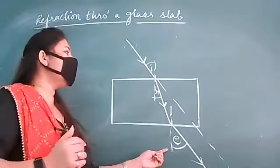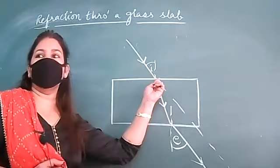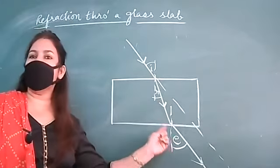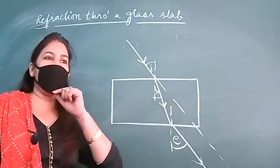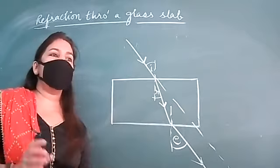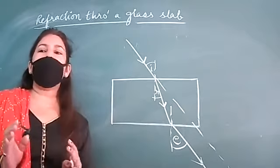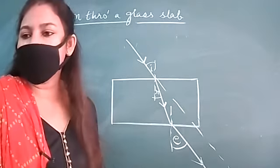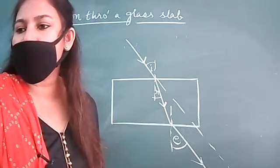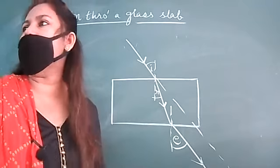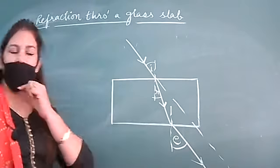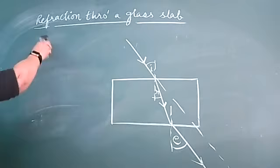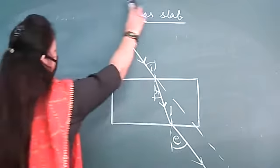We want to prove that the emergent ray is parallel to the incident ray. Before that, we have to arrive at a very important conclusion. We will do that through the principle of reversibility of light. So let us state the principle of reversibility of light.